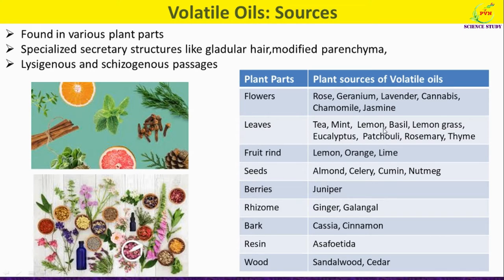Volatile oils are also present in the fruit peels of lemon, orange, and lime. They are also produced from the seeds of almond, celery, cumin, and nutmeg, as well as from the berries of juniper and the rhizome of ginger or galangal.